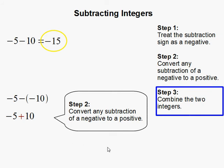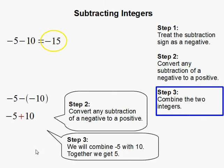Step 3: Combine the two integers. So in this case we will combine negative 5 and positive 10.